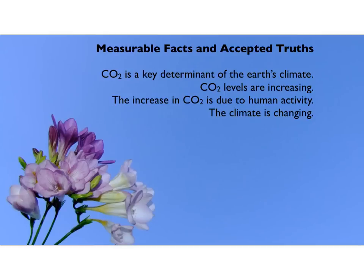A quick summary of what we know: CO2 is a key determinant of Earth's climate — the Earth is warmer than it would be because of thermal radiation from the sky from greenhouse gases. CO2 levels are increasing due to human activity — we put it there — and the climate is changing. These are all measurable things we are seeing happen. There is no doubt and no debate about these facts. There's debate about details, but the broad picture is clear.